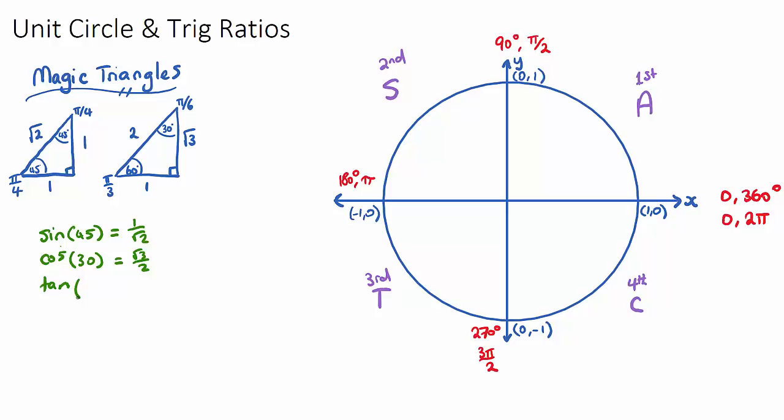If we want to do tan of 60 degrees or π/3 radians, we can go to the triangle that has π/3 and take tan, which is opposite over adjacent. It'd be √3 on 1, which we can just say is √3. So these two triangles help us to find all of the key trig ratios that we need in non-calculator exams. We can find sine, cos, and tan of 30, 45, and 60 degrees.